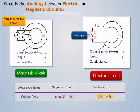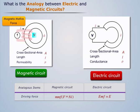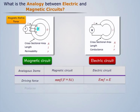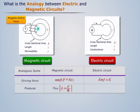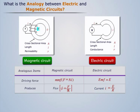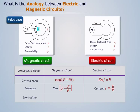The magnetomotive force is created by winding N turns of wire carrying a current I around the toroidal core. This MMF results in the creation of magnetic flux Φ, which corresponds to current in an electrical circuit. The magnetic flux is proportional to the magnetomotive force and inversely proportional to the reluctance R, which corresponds to resistance in an electrical circuit.